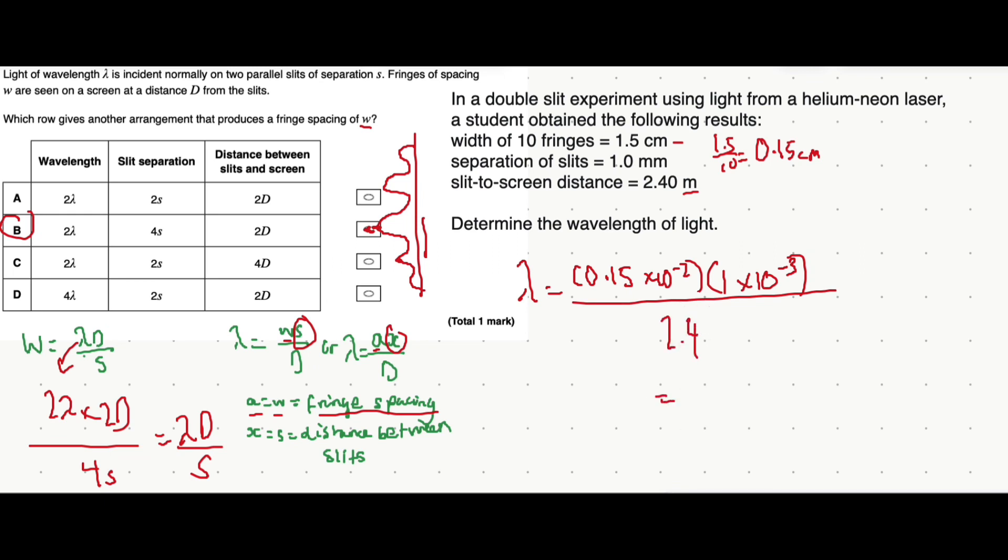Put all of that into a calculator and you'll get the wavelength. That's the whole purpose of Young's double slit experiment, by the way—to measure the wavelength of light using diffraction. On a calculator that gives a value of 6.25 times 10 to the minus 5 meters.